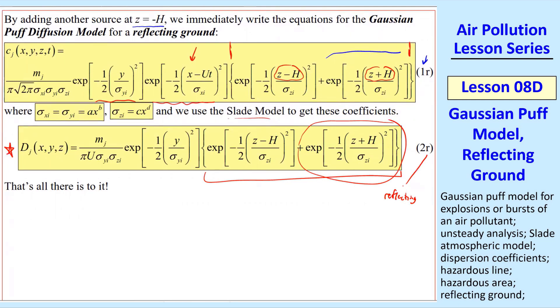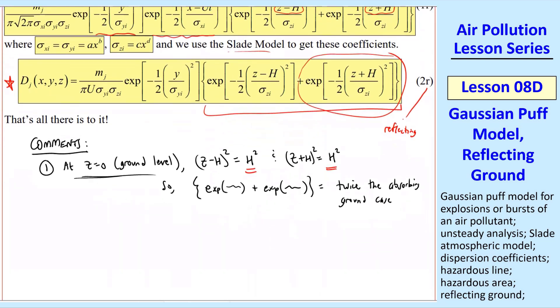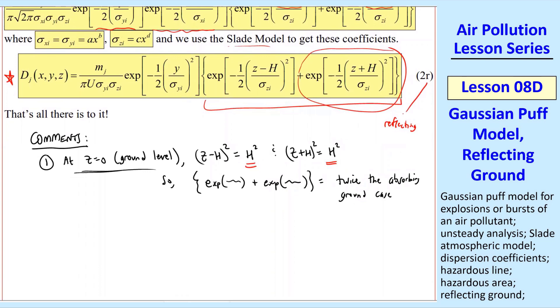Let me make a couple comments. Comment 1: at z equals 0, right at the ground, z minus h squared gives negative h squared, and here we have positive h squared. Those are the same. These two terms are identical. The reflecting case is twice the absorbing ground case at z equals 0. Of course, this is not true at other z's, but it is the case right at the ground. Same thing happened with the plume.